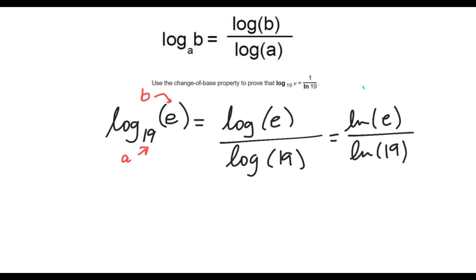And then what's ln of E? One, right, because ln is base E. What would I raise that to to get that E? And so that's how we would get 1 over ln of 19.